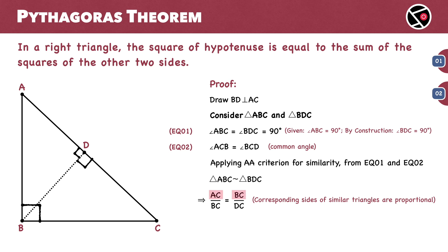In this equation, the numerators in both fractions are sides of triangle ABC: AC and BC. The denominators, on the other hand, are sides of the second triangle BDC: BC and DC.